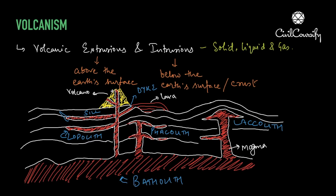We now know the scientific reasons - volcanism is related to crustal disturbances, particularly where there are zones of weakness with deep faulting and folding. As depth increases, temperature also increases: for every 65 feet of depth there is an increase of 1 degree Fahrenheit. This is why magma is really hot in the regions below the earth's crust and is in a semi-molten state. Magma contains many gases such as CO2, sulfurated hydrogen, small portions of nitrogen, chlorine, and other volatile substances.